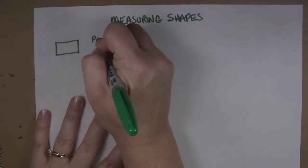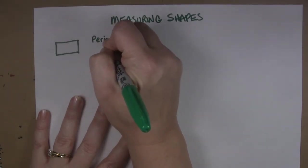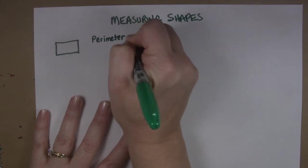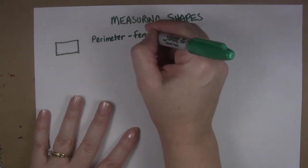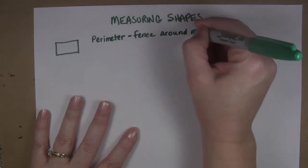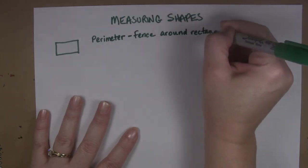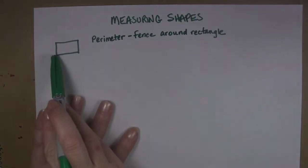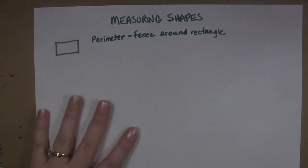One is we might measure the perimeter and the perimeter is like measuring the fence around the rectangle. So it would be if you measured this then this then this then this, so it's around the rectangle.